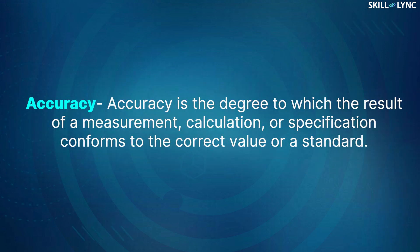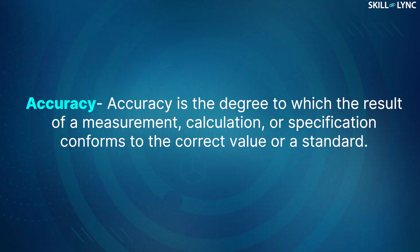Accuracy is the degree to which the result of a measurement, calculation or specification conforms to the correct value or a standard. Both statements sound very complicated and confusing. We'll explain it with a very simple example.